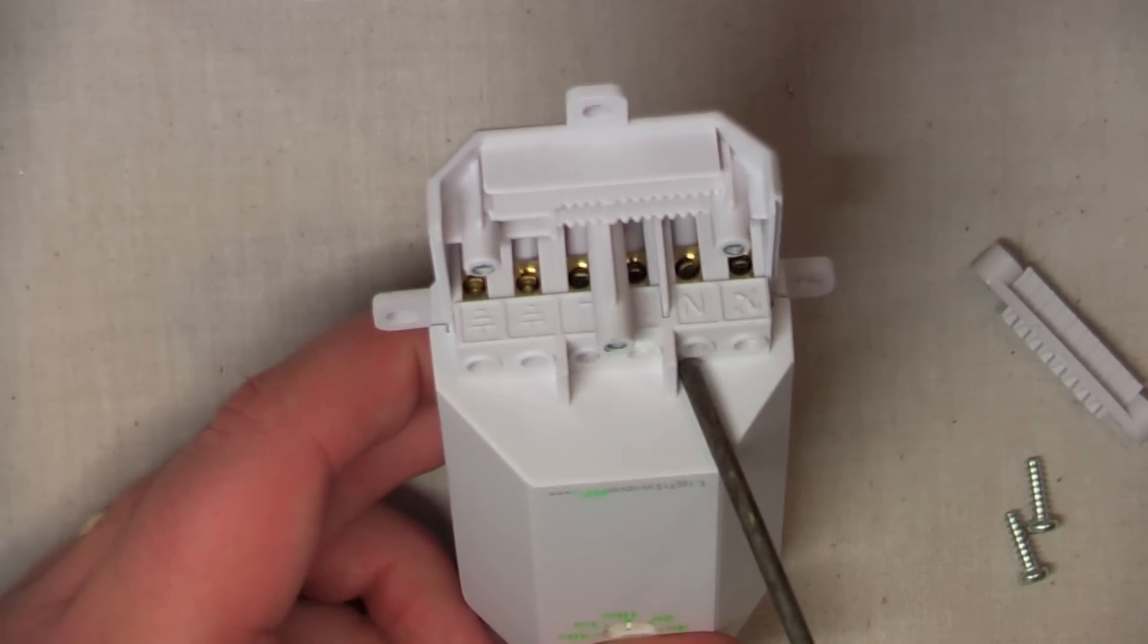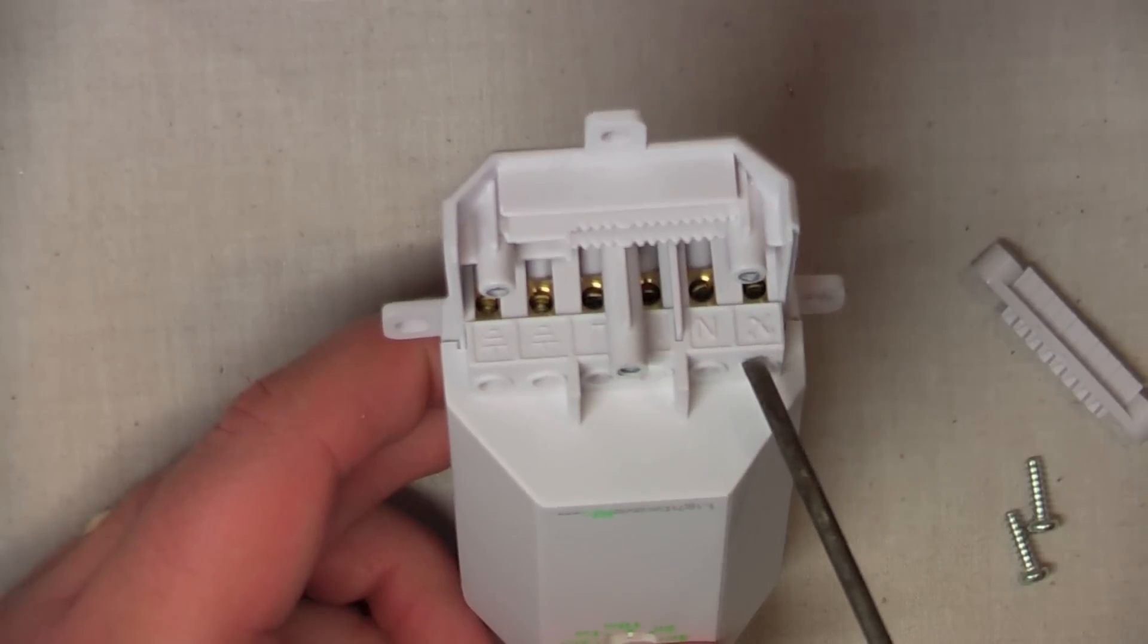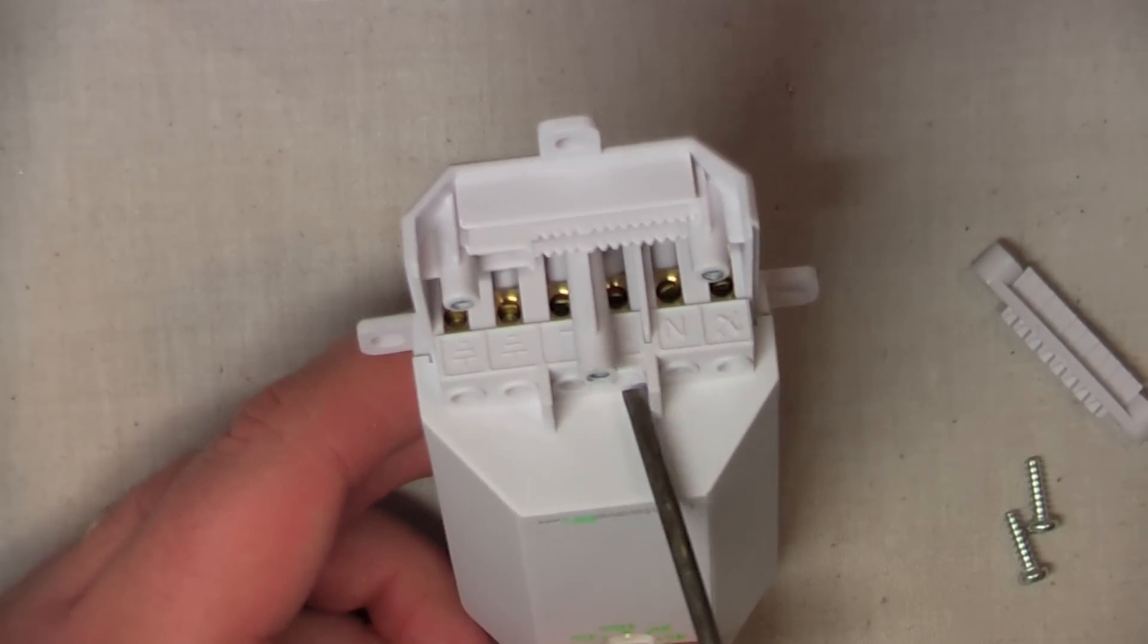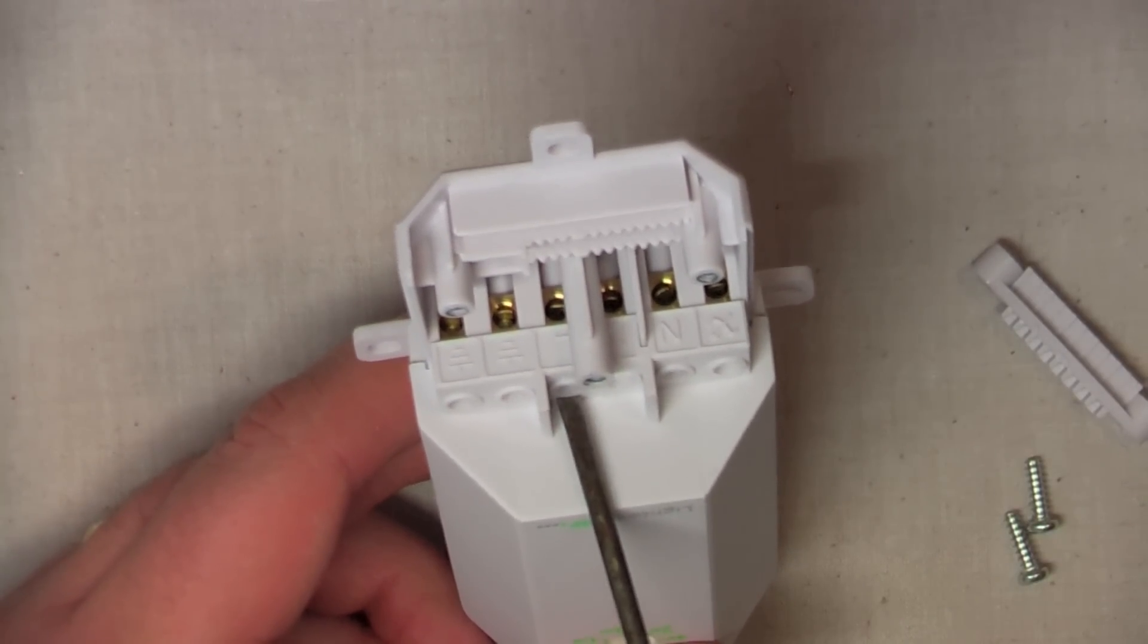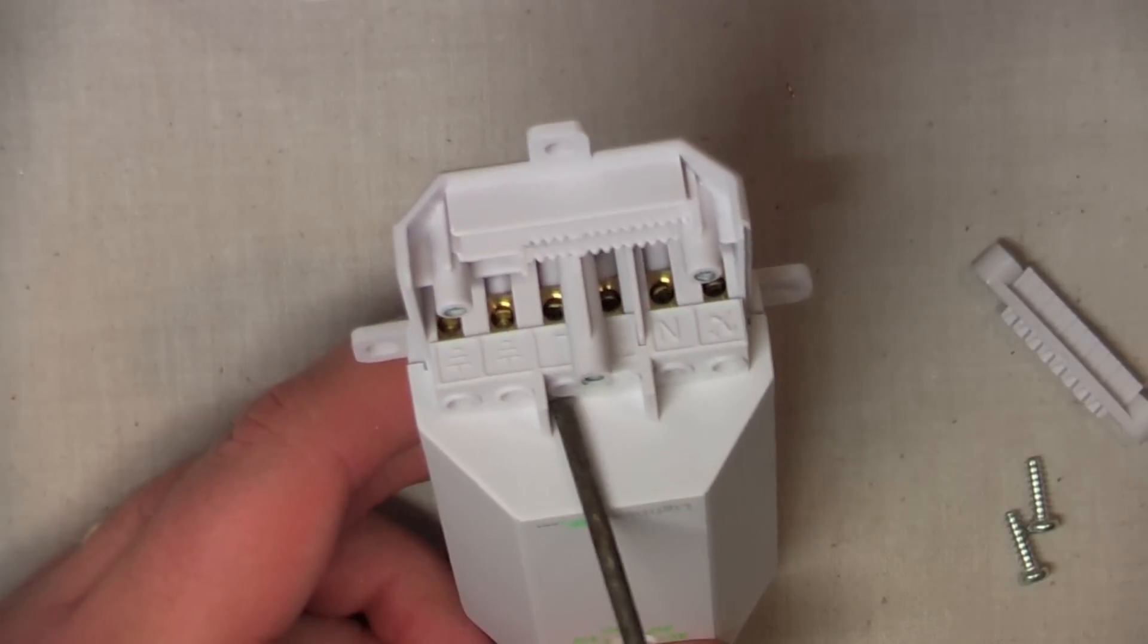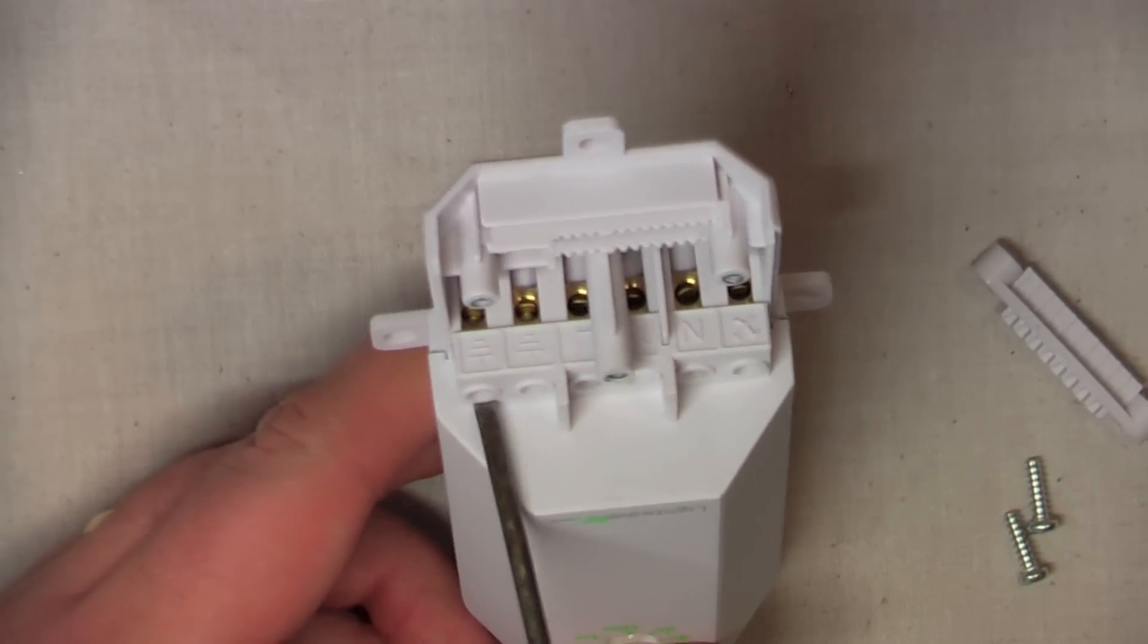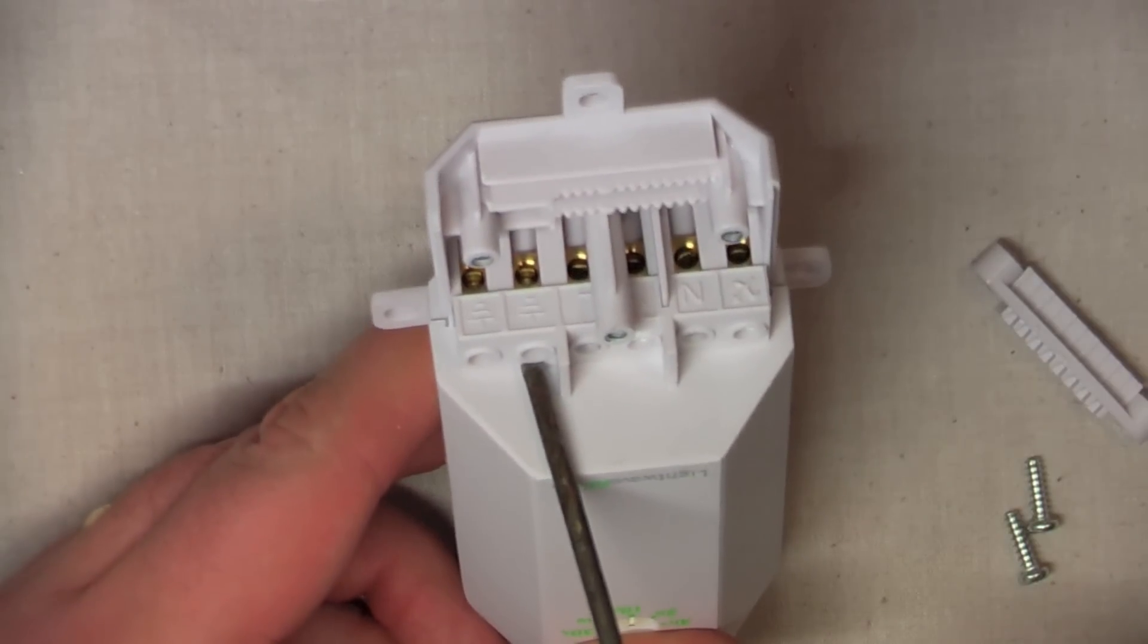These two here are the load side of the relay, so that's basically a switch live and a neutral. The middle two are the supply side, so we need to put some power into here for the device to work and for it to output any power. There's the live there and neutral. And on this end we've got two earth terminals, which you would wire into your earth cables.